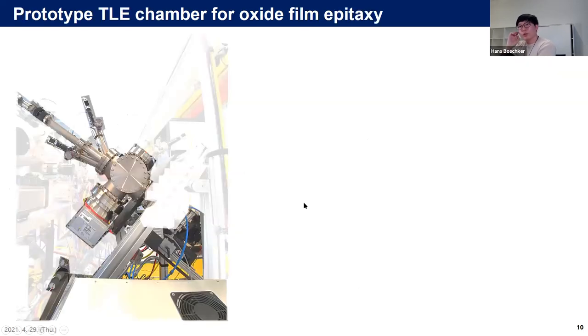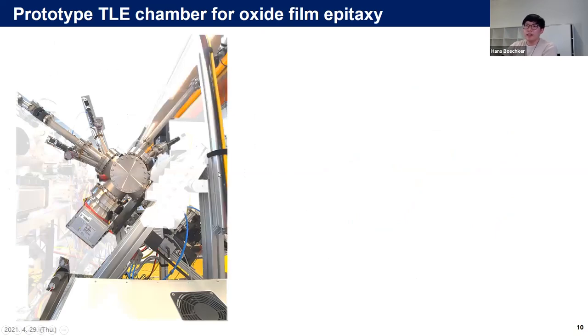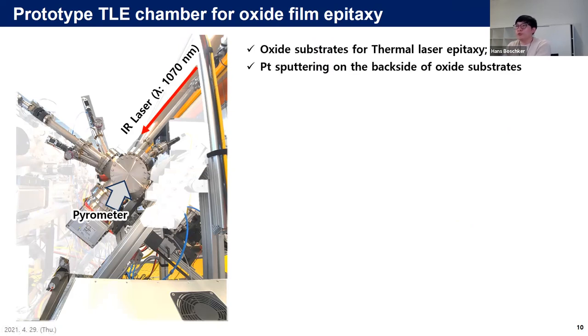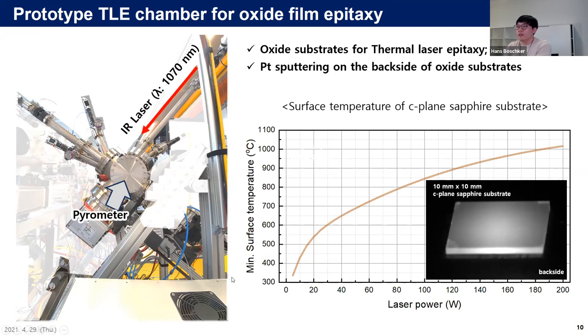Nowadays we are working on epitaxy. For this, we added an additional infrared laser for heating the substrate. The surface temperature of substrate is measured by pyrometer attached to this side. Now aluminum oxide sapphire substrate or magnesium oxide substrate are used for epitaxy. These oxide substrates are transparent for the IR laser, so platinum was sputtered on the backside of the substrate. This is the measured substrate temperature. Since the emissivity was set as one, this guaranteed the lower bound of the real substrate temperature.